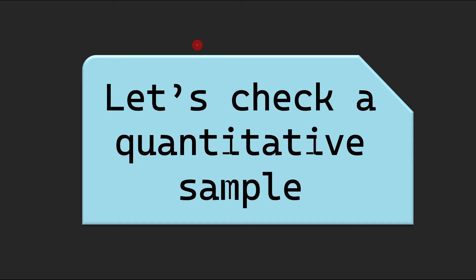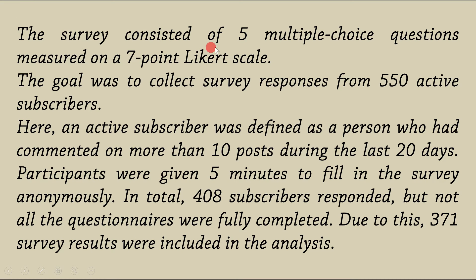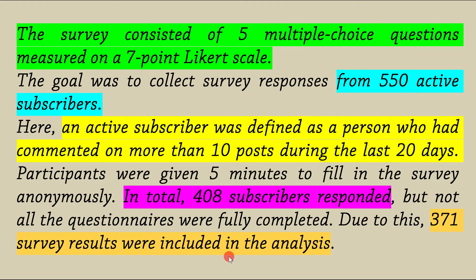Let's consider a quantitative sample. The survey consisted of five multiple-choice questions measured in a seven-point Likert scale. The goal was to collect survey responses from 550 active subscribers. Here, an active subscriber was defined. You see, active subscriber here is defined as a person who had commented on more than 10 posts during the last 20 days. Participants were given five minutes to feed the survey anonymously. In total, 408 subscribers responded. But not all the questioners were fully completed. Due to this, 371 survey results were included in the analysis. Here, I highlighted main points. As you see, everything is okay with this methodology.